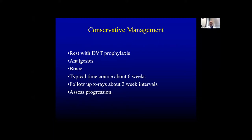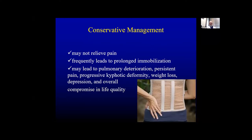Conservative management in this patient includes rest with DVT prophylaxis, analgesic medication such as NSAIDs and sometimes opiates, and also bracing to maintain mobility, with a typical time course of about six weeks, follow-up x-ray at two-week intervals, and assessment of progression. However, conservative management may not relieve pain and frequently leads to immobilization, pulmonary deterioration, persistent pain, progressive kyphotic deformity, weight loss, depression, and overall compromise in life quality, especially in geriatric patients.